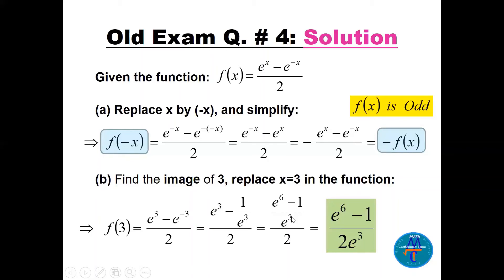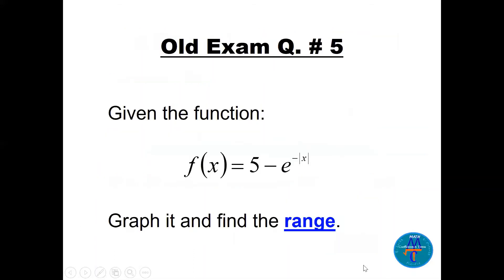To find f(3): substitute x = 3, giving f(3) = (e³ − e^(−3)) / 2. Since e^(−3) = 1/e³, make the LCD e³ to get (e^6 − 1) / (2e³). That is the image of 3.